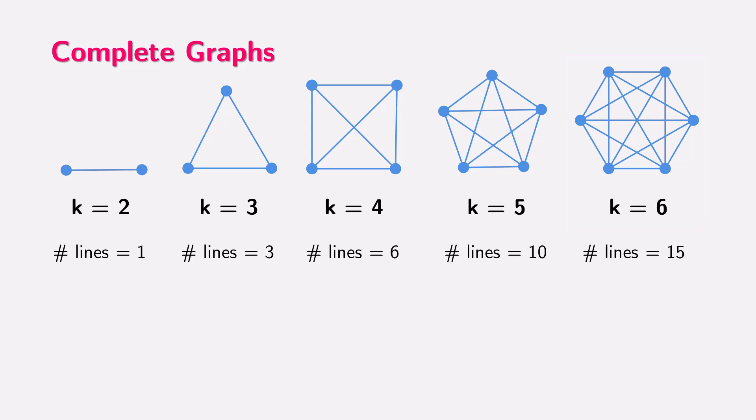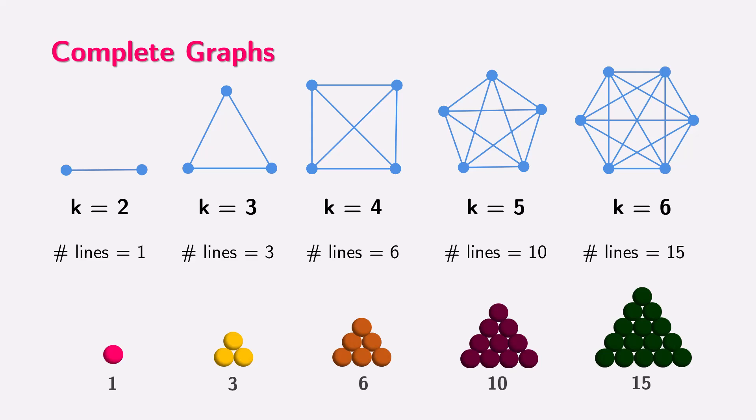If you look closely, you'll notice a pattern. The number of lines in each complete graph corresponds to the triangular number sequence: 1, 3, 6, 10, 15, and so on. This is because, in a complete graph, each new point connects to all the previous points, adding lines in a way that mirrors how triangular numbers are formed. So, complete graphs offer a great visual way to understand triangular numbers.